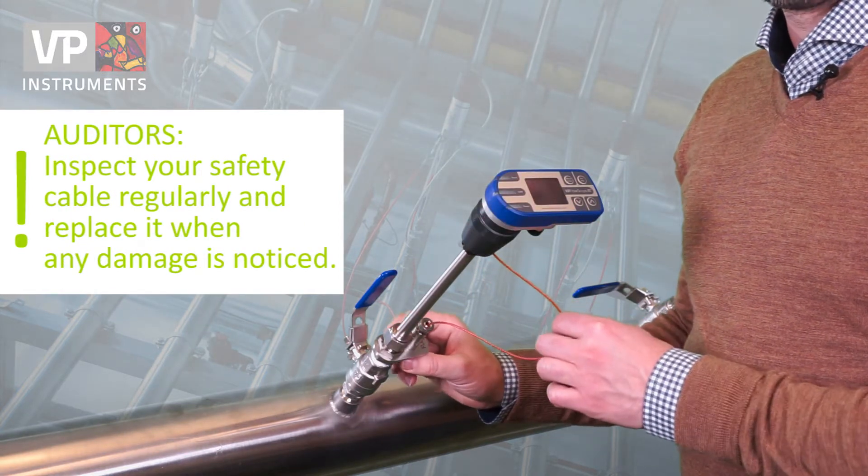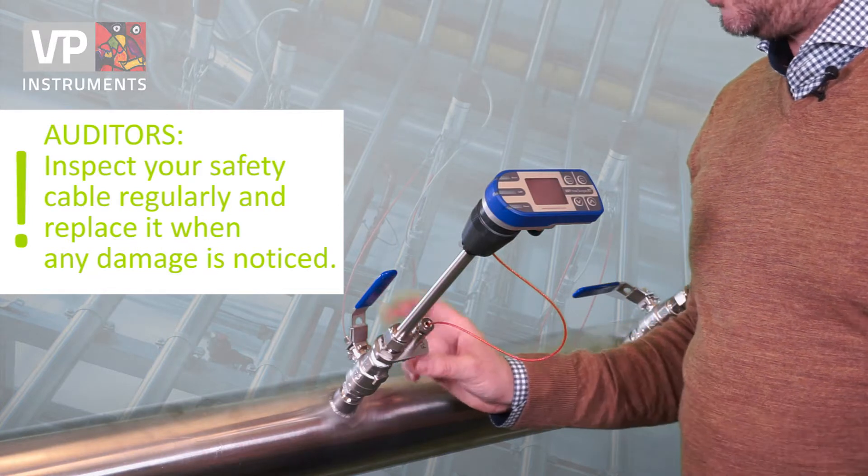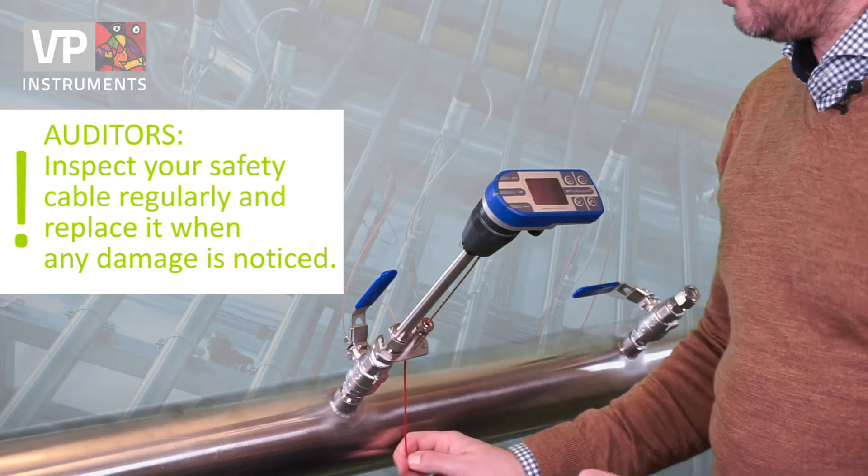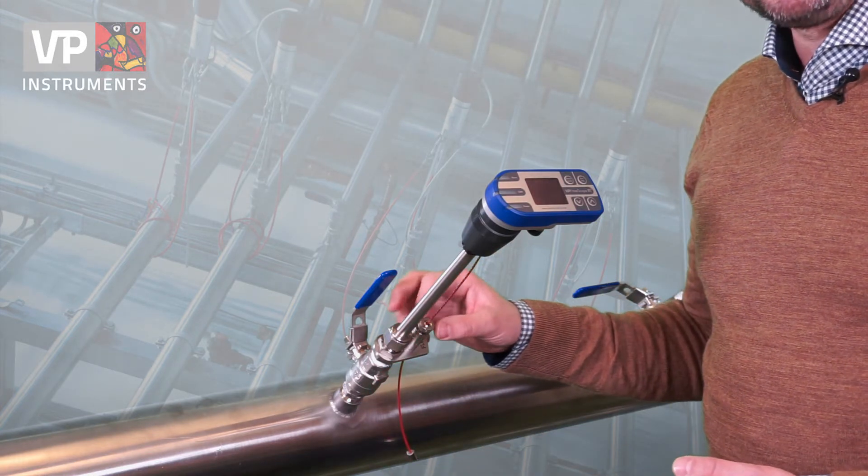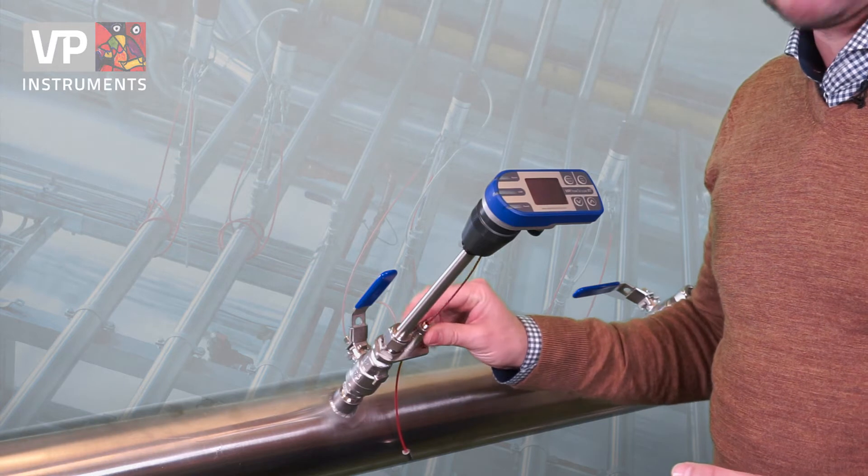The next step is to make sure there's no slack on the safety cable. You do that just by pulling on the back of the cable and pulling it downwards. Then the final step is to turn the spool all the way down into a locking position.